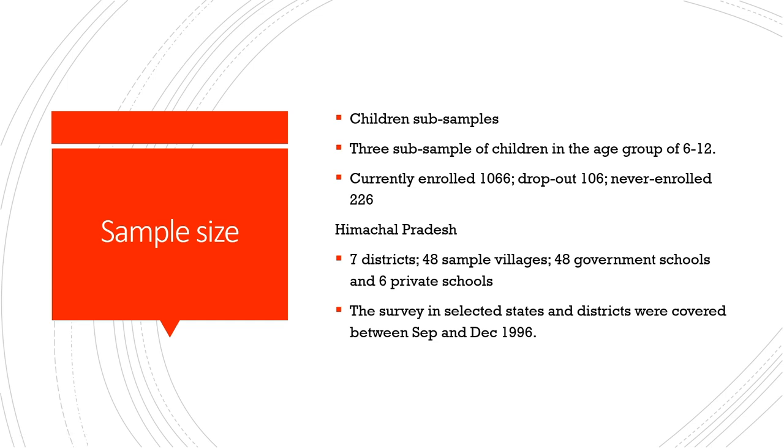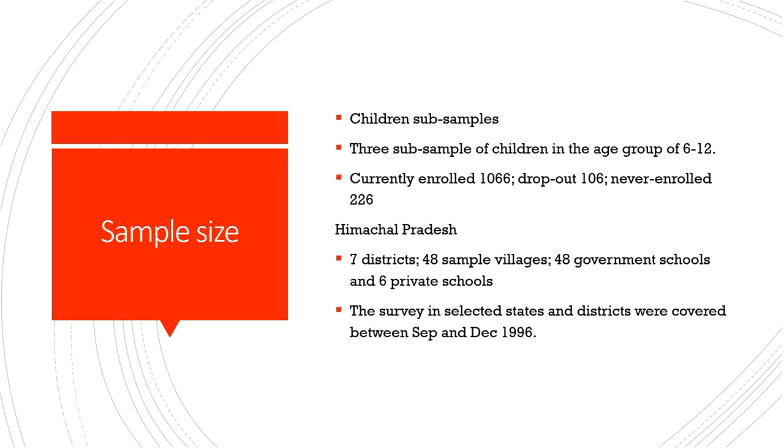Children also constituted a subsample. Interviews were done with children, and the information collected gave their perception about elementary education. This is one of the biggest contributions of this report — it was way ahead of its time in providing both parents' and children's views on what they expect from elementary education or why they cannot continue in it. There were three subsamples: children currently enrolled (about 1,066), dropouts (about 106), and those never enrolled (about 226).